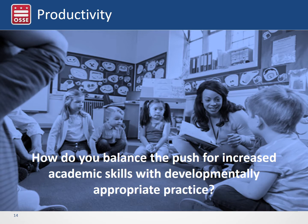Principle number two: knowing what is individually appropriate. What we learn about specific children helps us teach and care for each child as an individual. By continually observing children's play and interaction with the physical environment and others, we learn about each child's interests, abilities, and developmental progress. Principle number three: knowing what is culturally important. We must make an effort to get to know the children's families and learn about the values, expectations, and factors that shape their lives at home and in their communities. This background information helps us provide meaningful, relevant, and respectful learning experiences for each child and their family.